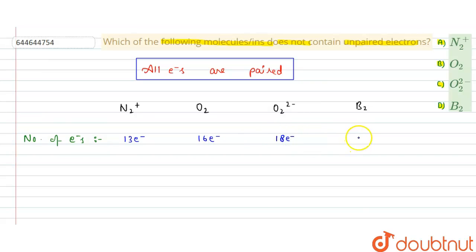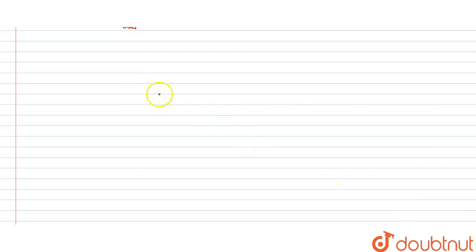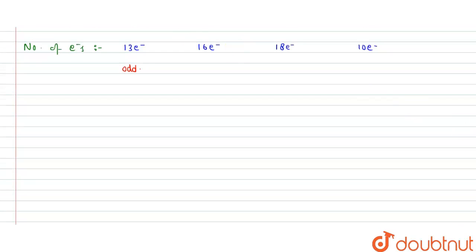N₂⁺ has 13 electrons — this is an odd number, which means there is definitely an unpaired electron. So N₂⁺ is not our answer; we are looking for all-paired electrons only. Remaining species have 16 and 18 electrons. We apply Molecular Orbital Theory, which has two cases: species with less than 14 electrons, and species with greater than 14 electrons.